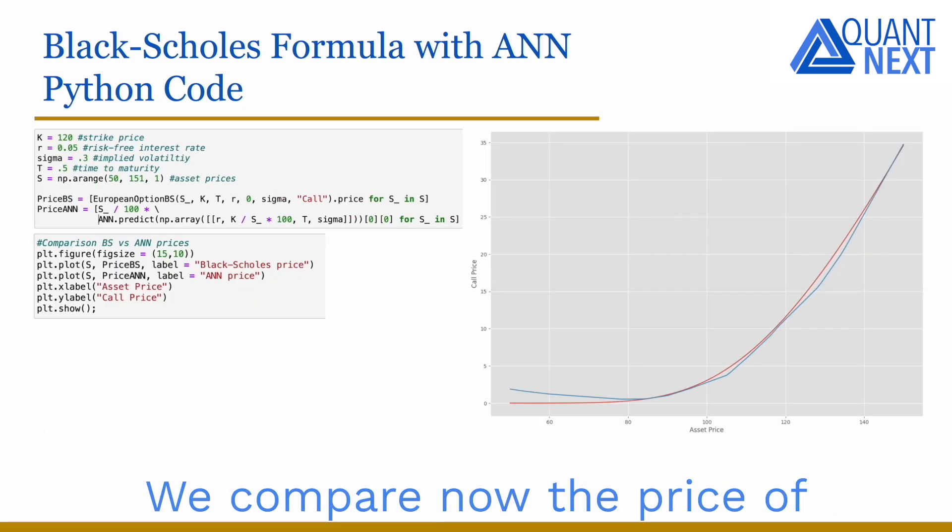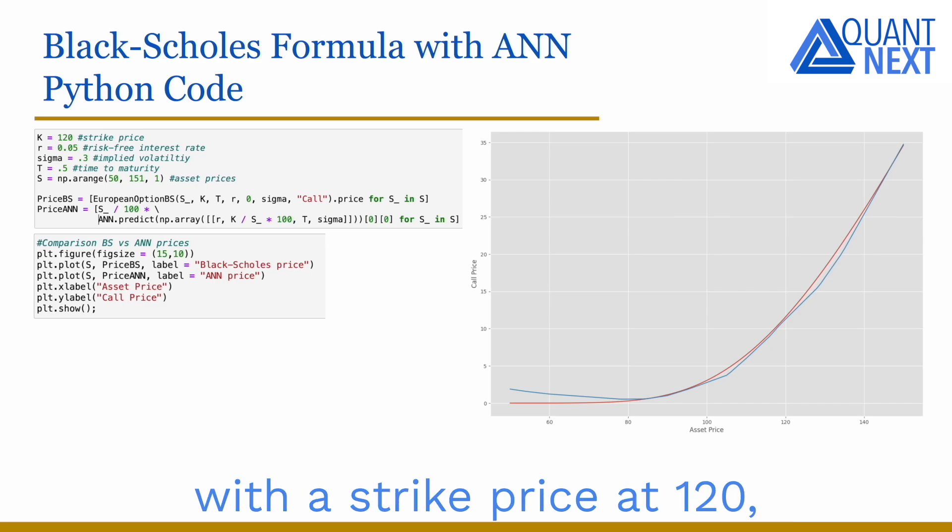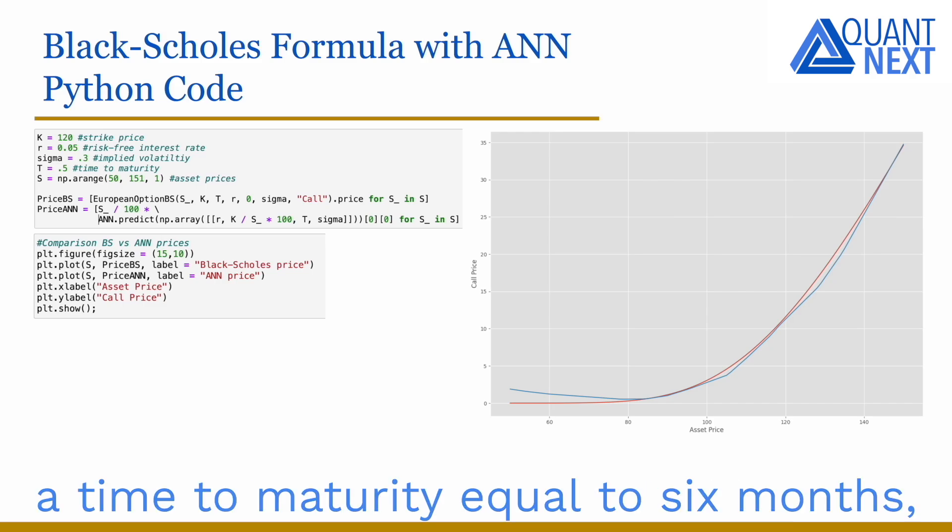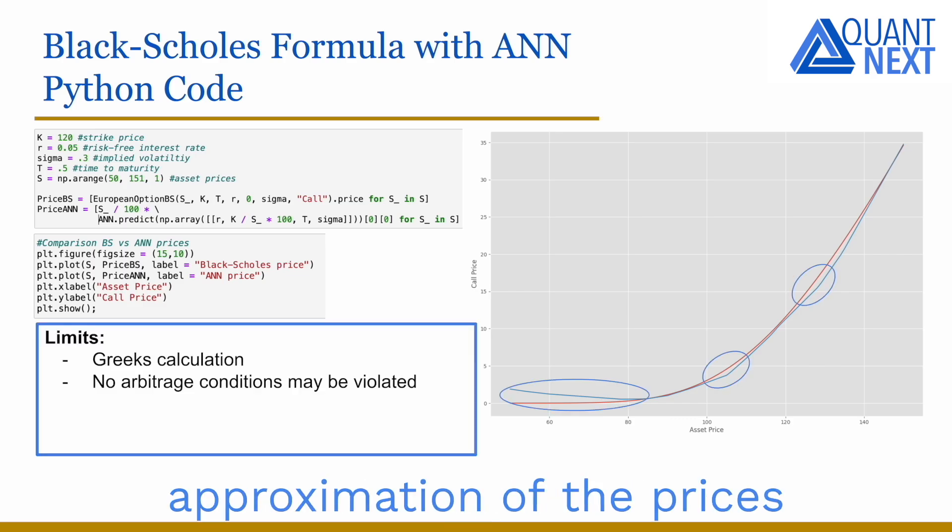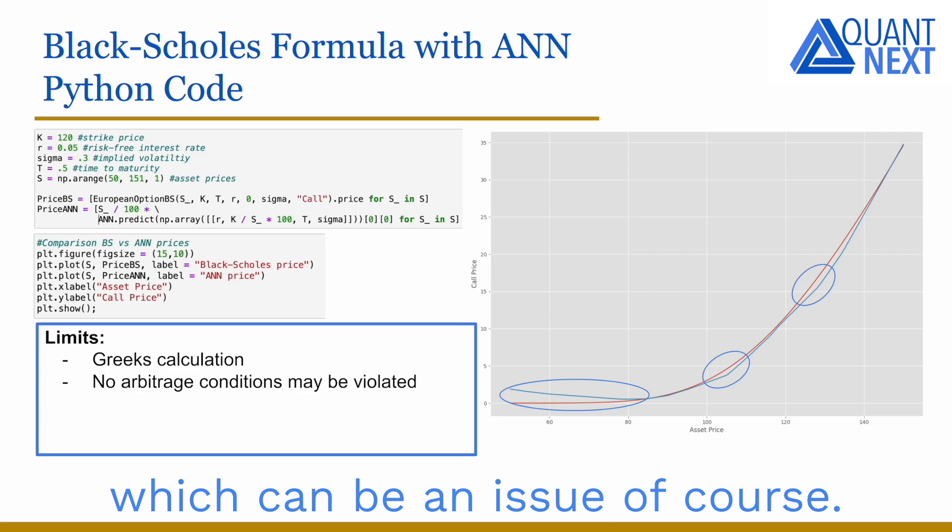We compare now the price of a call option when changing the asset price with a strike price at 1.20, a time to maturity equal to 6 months, a risk-free interest rate fixed at 5%, and a volatility at 30%. Even if we obtain good approximation of the prices, we see on the chart that the estimation of the Greeks may be more unstable, which can be an issue.